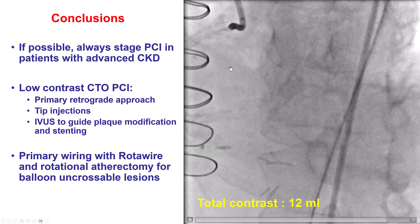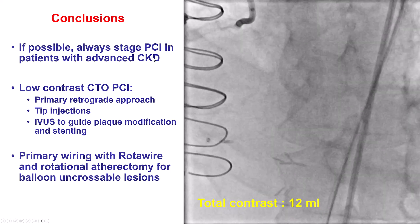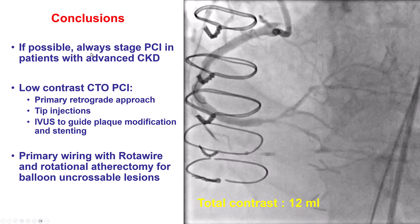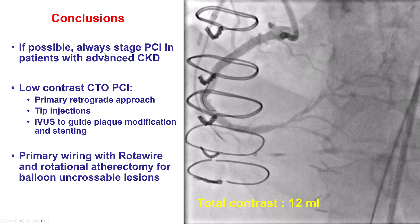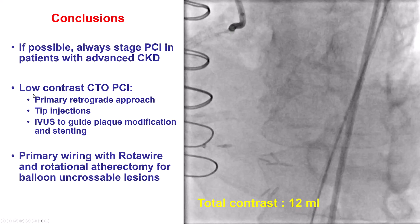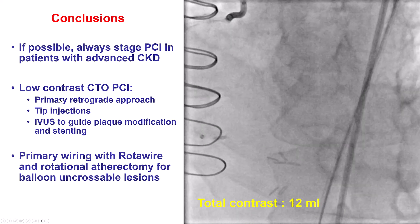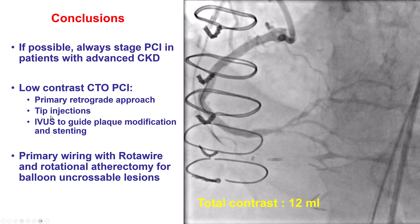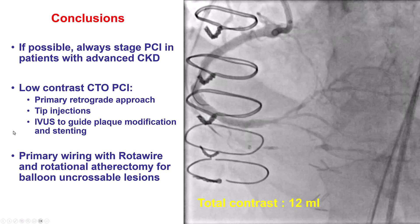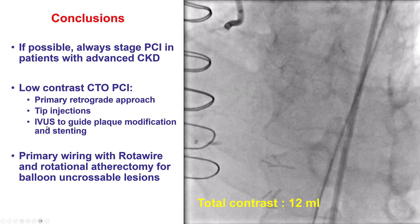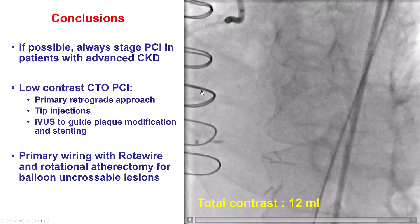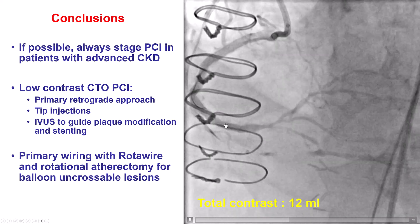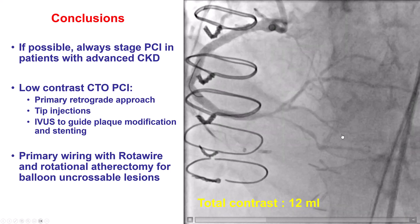Several lessons from this case. First, in patients with advanced CKD — our patient was stage 4 with a GFR of 15 — you should stage PCI, because a high contrast dose might predispose to acute kidney injury. To minimize contrast dose, we used a primary retrograde approach through the occluded vein graft, tip injections through the microcatheter instead of guide injections, and intravascular ultrasound to confirm good expansion and a nice result before stenting. We then took just one picture at the end to confirm a good result and verify there were no complications such as perforation.